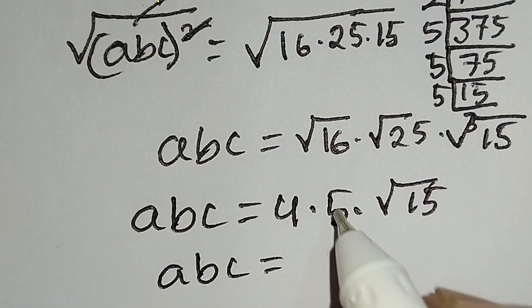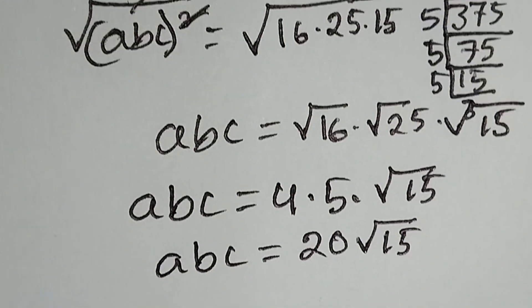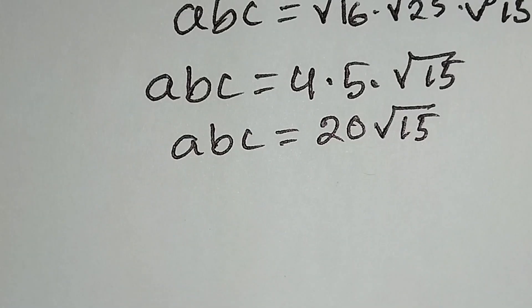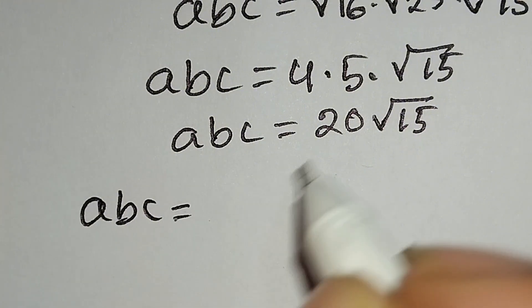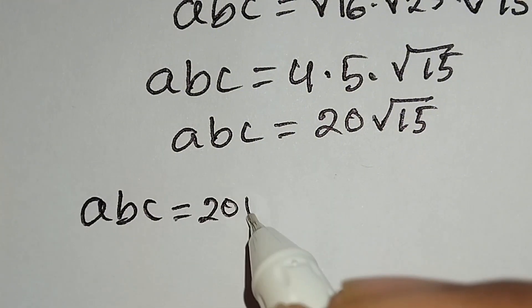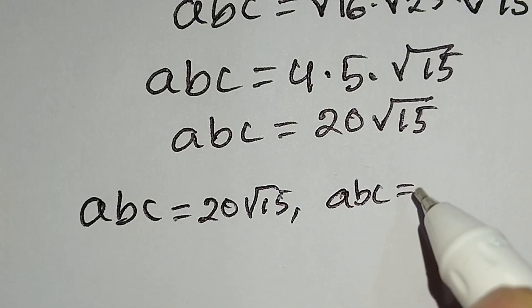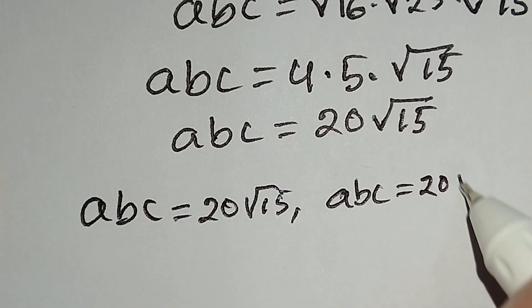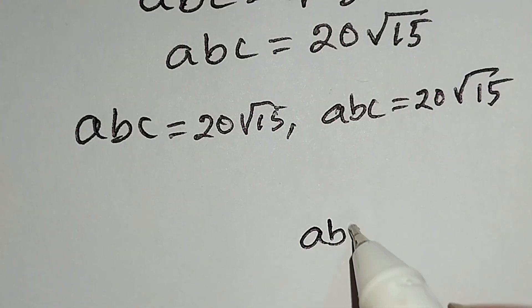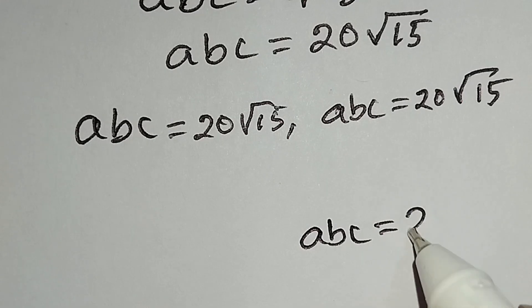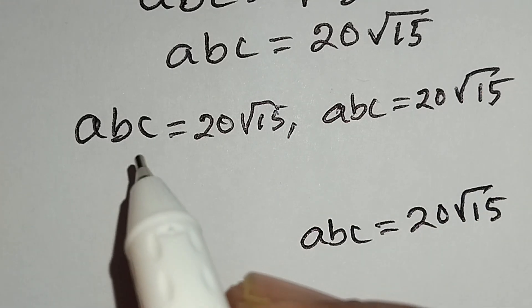The square root gives 4 times 5 is 20, times the square root of 15. So ABC is equal to 20 square root of 15. ABC equals 20√15.